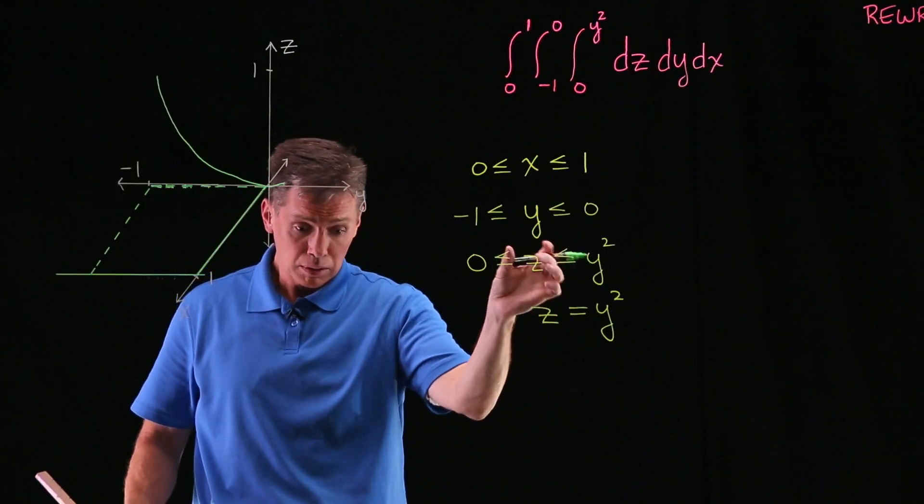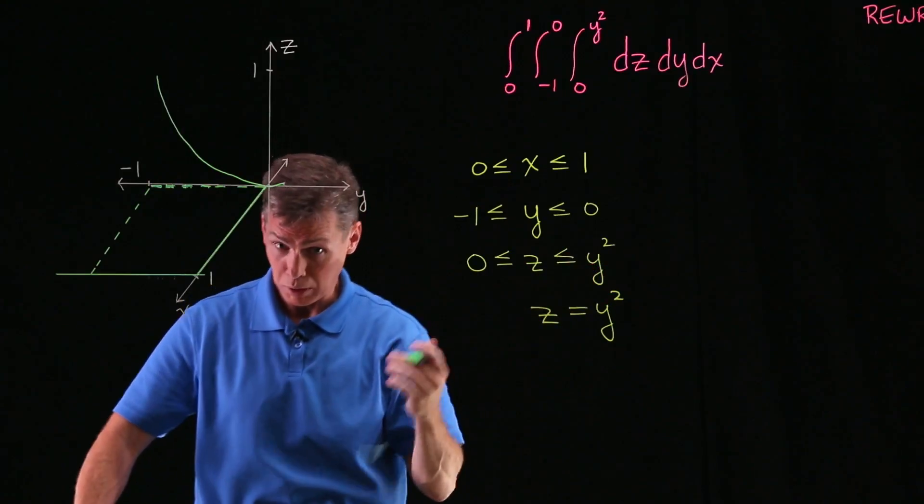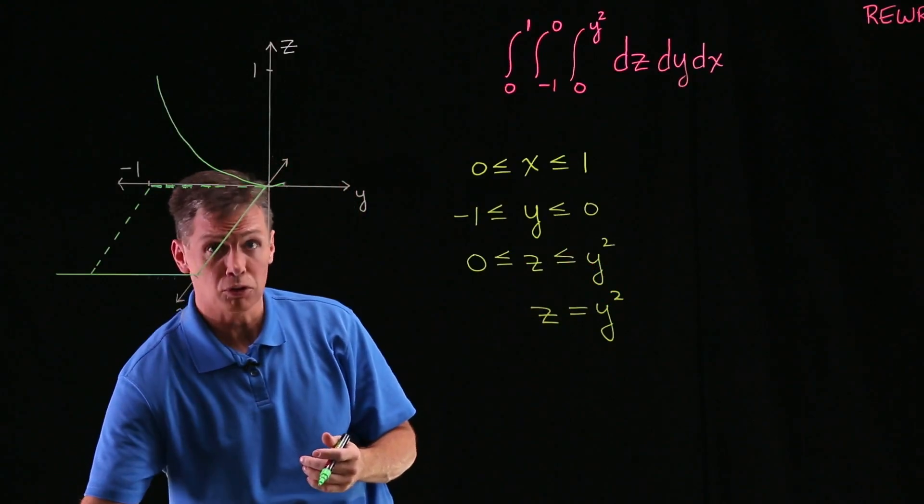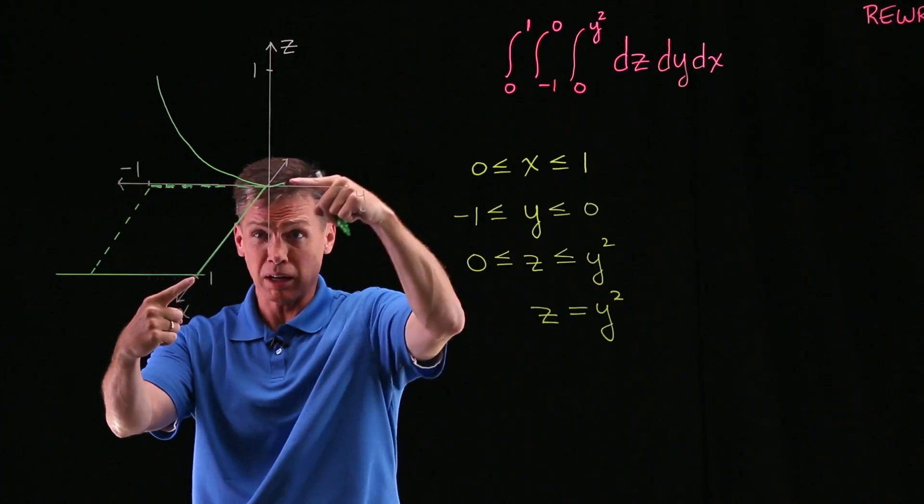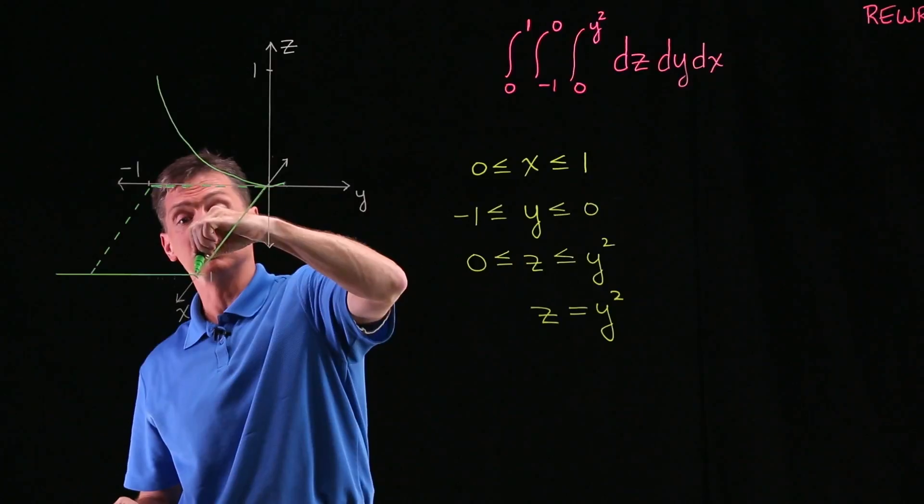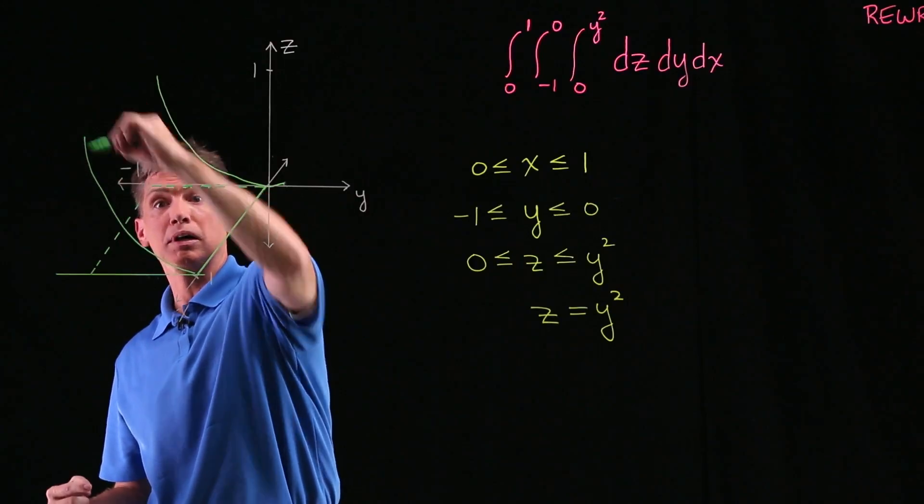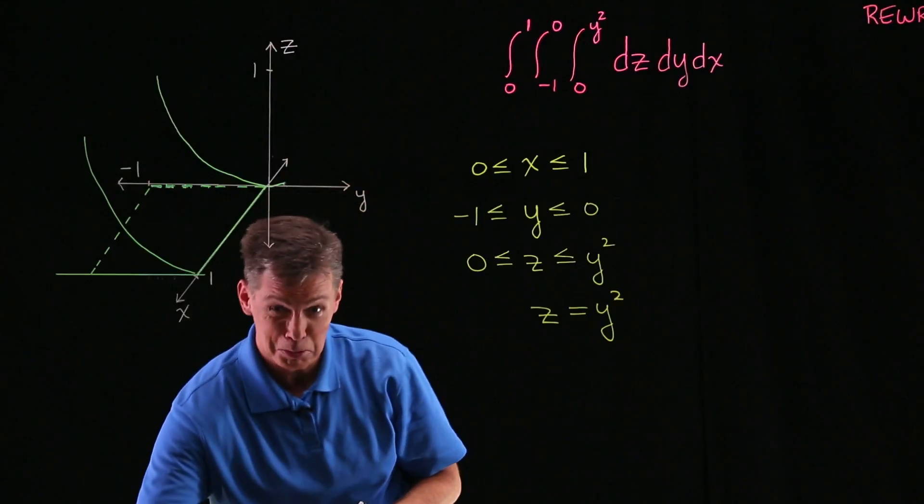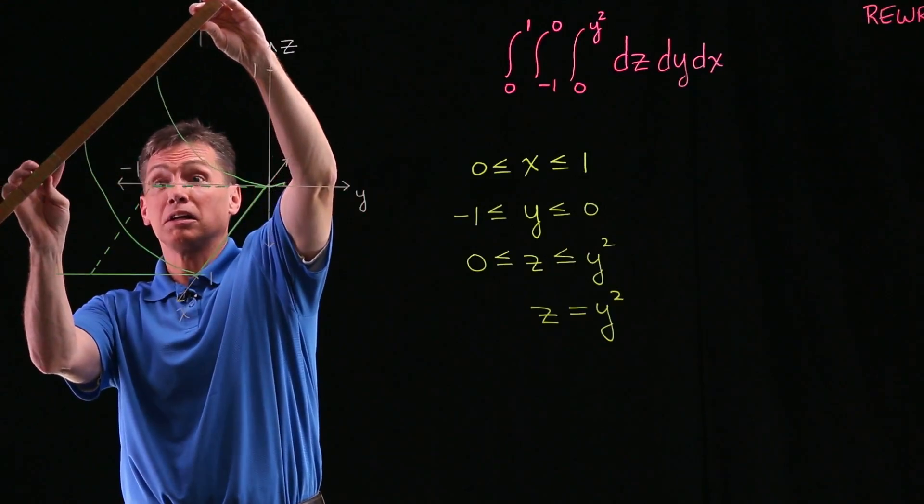And then that condition on z again where it doesn't go any higher than the parabola, what I'm going to try to do is draw this parabola at the front corner as well. I'm going to kind of copy that guy there and see if I can do a decent job of shadowing it up like that. Well, I don't know, not too bad maybe.